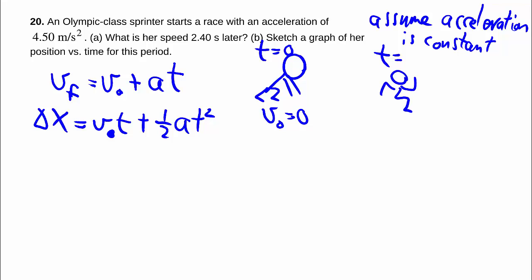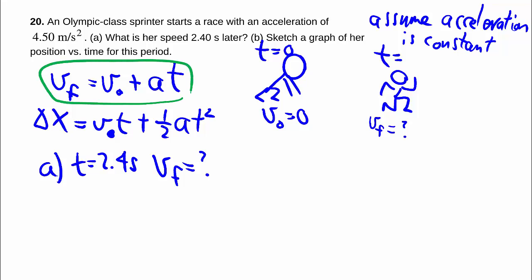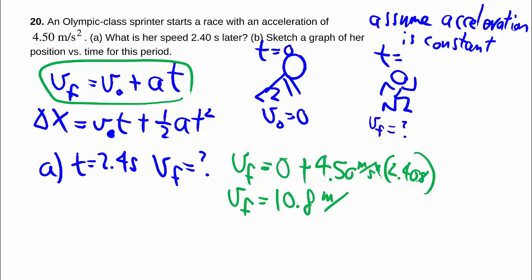For part a, we're asked for t equals 2.4 seconds, what is my final velocity? That's fairly simple given that you can just employ this equation and plug everything in because we already know a. v_f is equal to v_0 which is 0, plus 4.5 meters per second squared multiplied by 2.40 seconds. The seconds cancel with the seconds squared, and you get 10.8 meters per second.